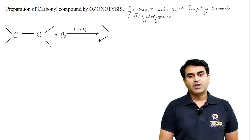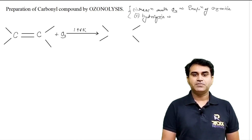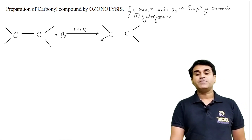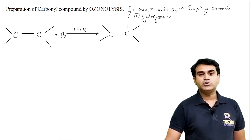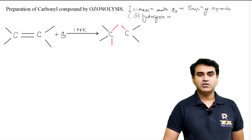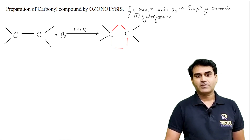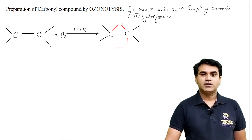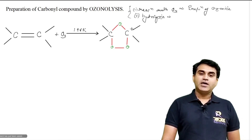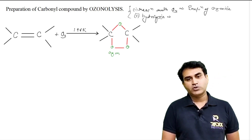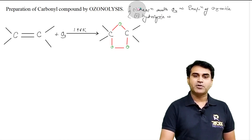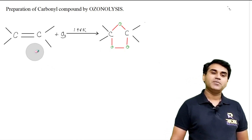Ozonide का formation कैसे होता है? Double bond को remove कर दो. यहां जो double bond था वो हमने remove कर दिया. उसकी जगह पे ozone molecule attach हो जाएगा - that is one oxygen, second oxygen and third oxygen. यह जो product बना, this is called ozonide. Ozonide is very very unstable product.